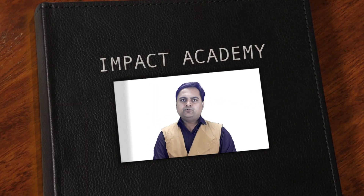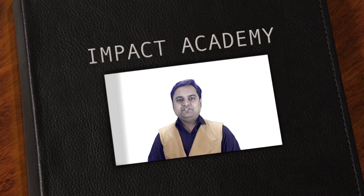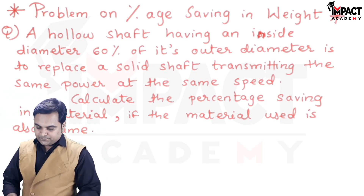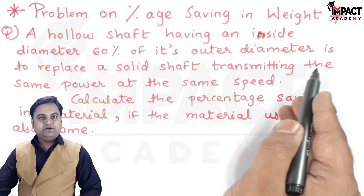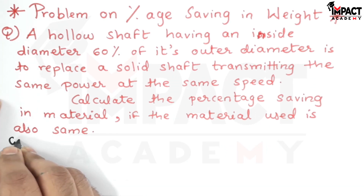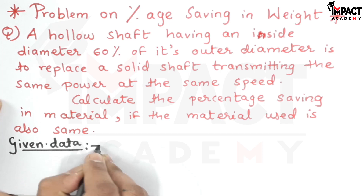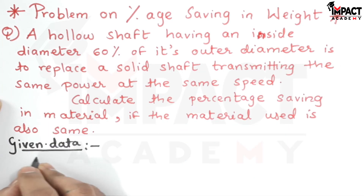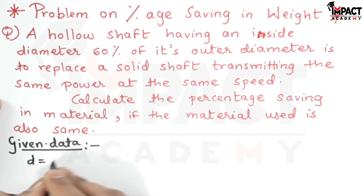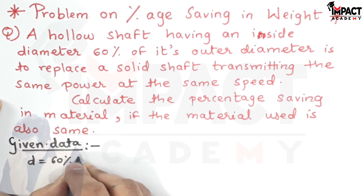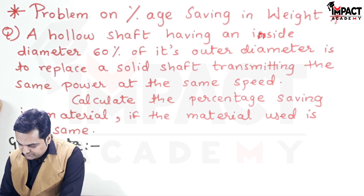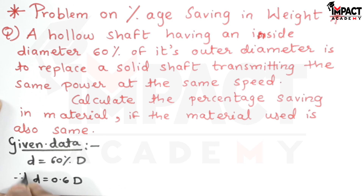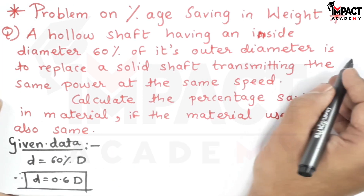In this video we are going to see a problem on percentage saving in weight. The question involves a hollow shaft having an inside diameter 60% of its outer diameter. So the inside diameter for the hollow shaft is denoted by small d, and it is 0.6 times of capital D (the outer diameter) for the hollow shaft.